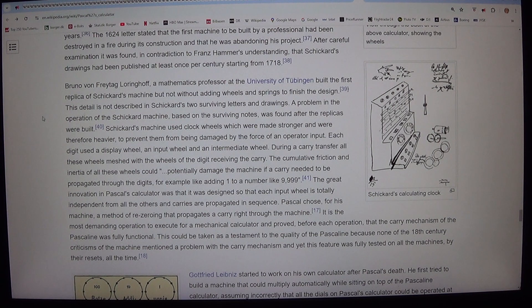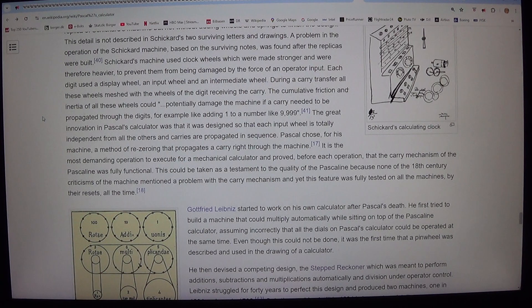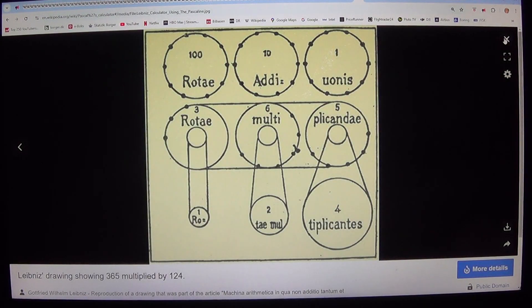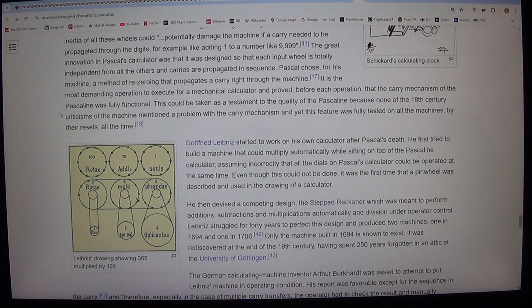Schickardt's machine used clock wheels which were made stronger and were therefore heavier, to prevent them from being damaged by the force of an operator input. Each digit used a display wheel, an input wheel and an intermediate wheel. During a carry transfer all these wheels meshed with the wheels of the digit receiving the carry. The cumulative friction and inertia of all these wheels could potentially damage the machine if a carry needed to be propagated through the digits, for example like adding one to a number like 9,999. The great innovation in Pascal's calculator was that it was designed so that each input wheel is totally independent from all the others and carries are propagated in sequence.